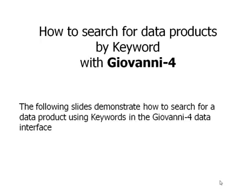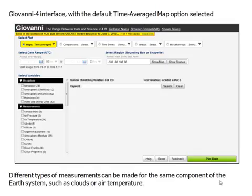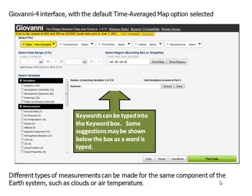This concludes the demonstration on how to plot seasonal time series. The following slides demonstrate how to search for a data product using keywords in the Giovanni 4 data interface. Here is the Giovanni 4 interface with the default time average map option selected. Keywords can be typed into the keyword box, and some suggestions may appear below the box as a word is typed.